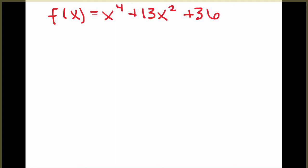So if you look at your handout, the conjugate zeros theorem says if a polynomial f(x) has only real coefficients and a plus bi is a zero of f(x), then the conjugate a minus bi is also a zero of f(x).